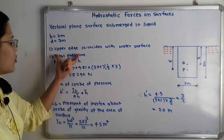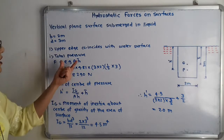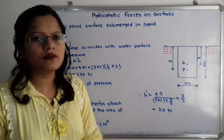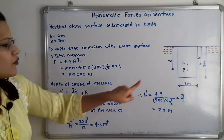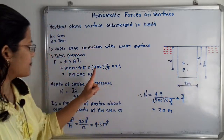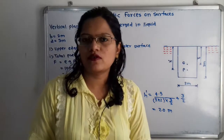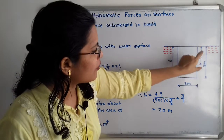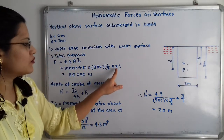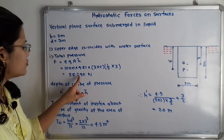Now we solve for the total pressure. The formula is F = ρgAh̄. Here ρ is the density of water = 1000 kg/m³, g = 9.81, area A = b × d = 2 × 3, and h̄ is the distance of the center of gravity from the free surface = d/2 = 3/2. Solving this gives a total pressure of 88,290 newtons.